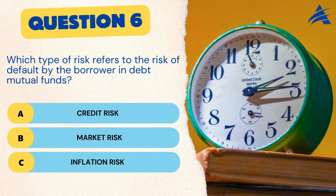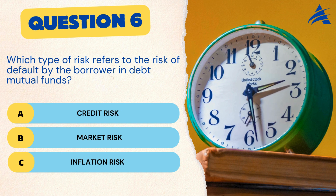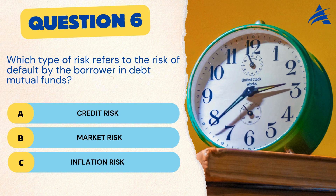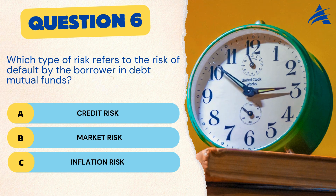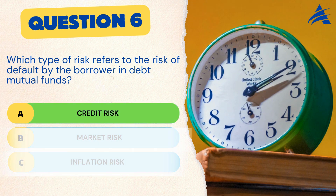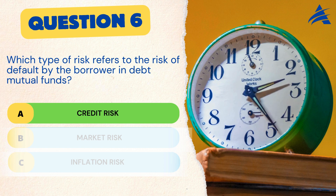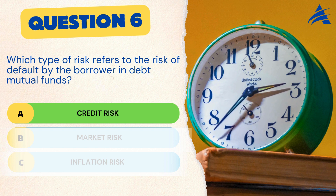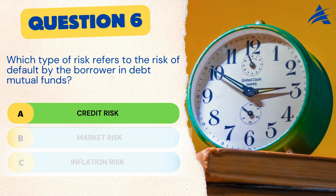Question 6. Which type of risk refers to the risk of default by the borrower in debt mutual funds? A. Credit risk. B. Market risk. C. Inflation risk. The correct answer is A. Credit risk. Credit risk is crucial to understand as it can directly impact the returns on your investments. Keep an eye on the creditworthiness of the issuers in your debt mutual fund portfolio.